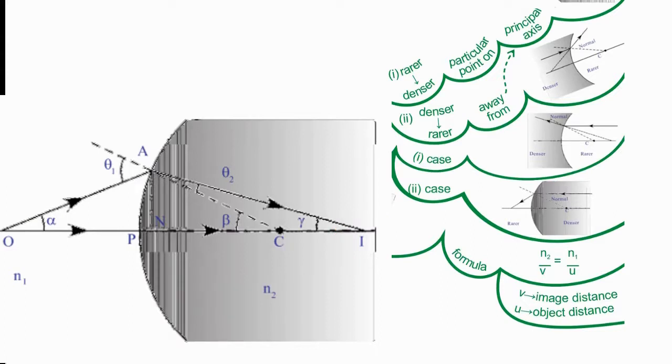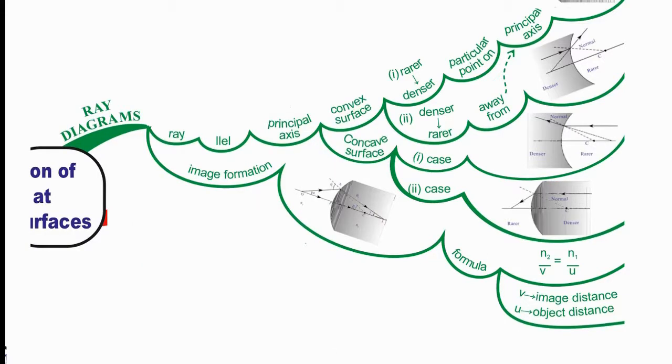Formula is given by N2/V = N1/U, where N2 and N1 are the refractive indexes of denser and rarer medium respectively, and V is the image distance, U is the object distance.